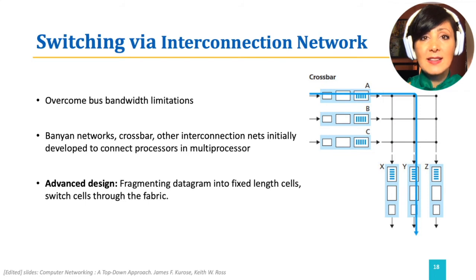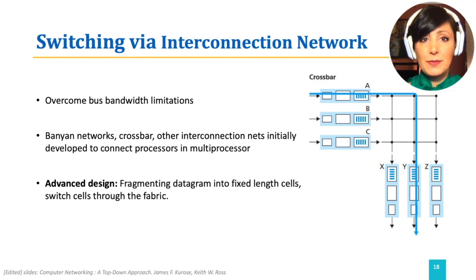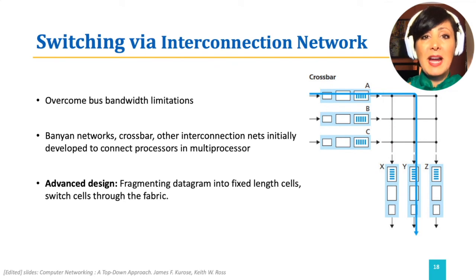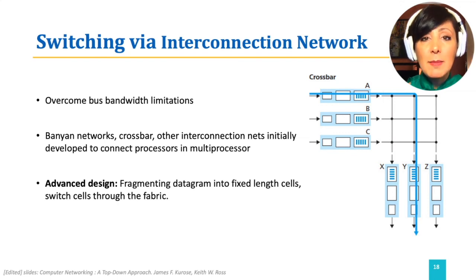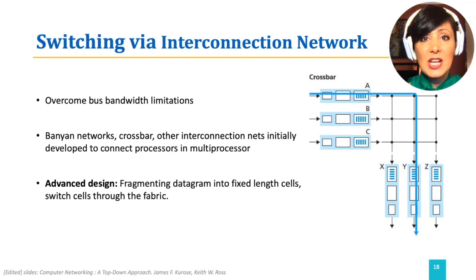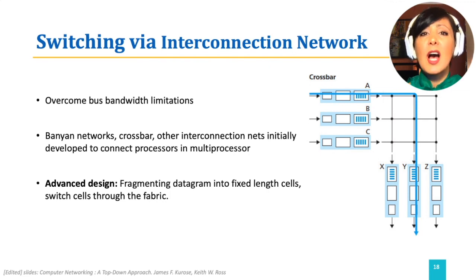A closed interconnect connecting the input port to the output port, which is signaled by the switch controller, sends the packet to the right output port. This structure is non-blocking, meaning that packets arriving are not blocked by the packet currently being switched if they are going to different ports. A packet will only have to wait if another packet is going to the same output port. There are also sophisticated versions of interconnect switching that employ multi-stage switching to even remove the blocking for the same target output up to a point.